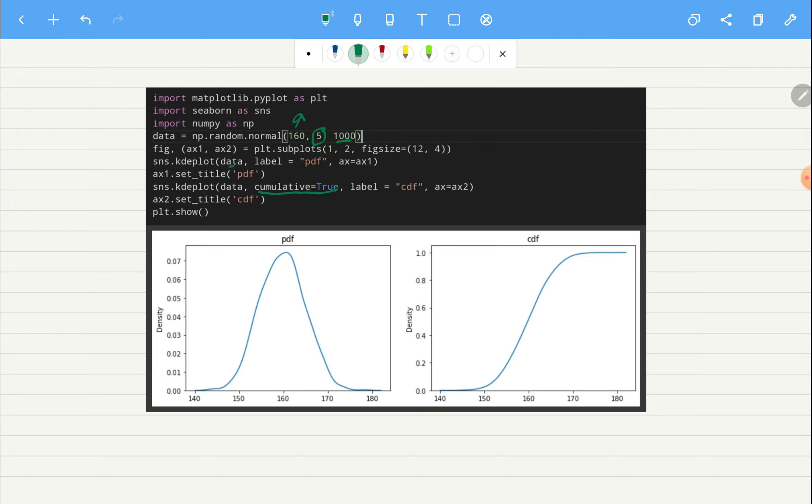So you can see here that we have 50 percent of the data this side and 50 of the data this side. So if we calculate area under the curve from this to this it will be 0.5.